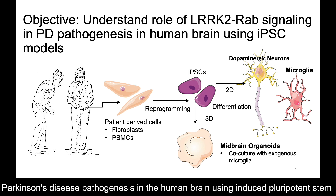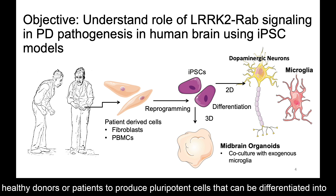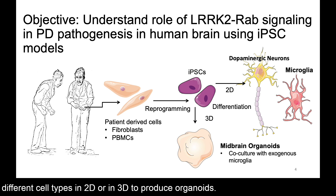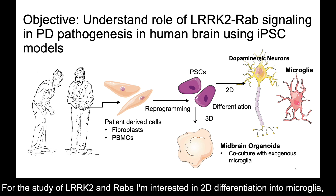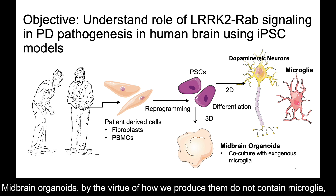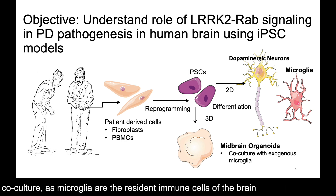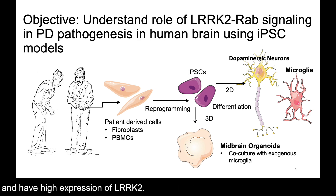The objective of my project is to understand the role of LRRK2-RAB signaling in Parkinson's disease pathogenesis in the human brain using induced pluripotent stem cell, or iPSC, models. iPSCs are produced by reprogramming cells derived from healthy donors or patients to produce pluripotent cells that can be differentiated into different cell types in 2D or in 3D to produce organoids. For the study of LRRK2 and RABs, I'm interested in 2D differentiation into microglia and 3D differentiation into midbrain organoids, which by the virtue of how we produce them do not contain microglia, and so an aim of my project is to introduce microglia into these organoids via co-culture, as microglia are the resident immune cells of the brain and have high expression of LRRK2.